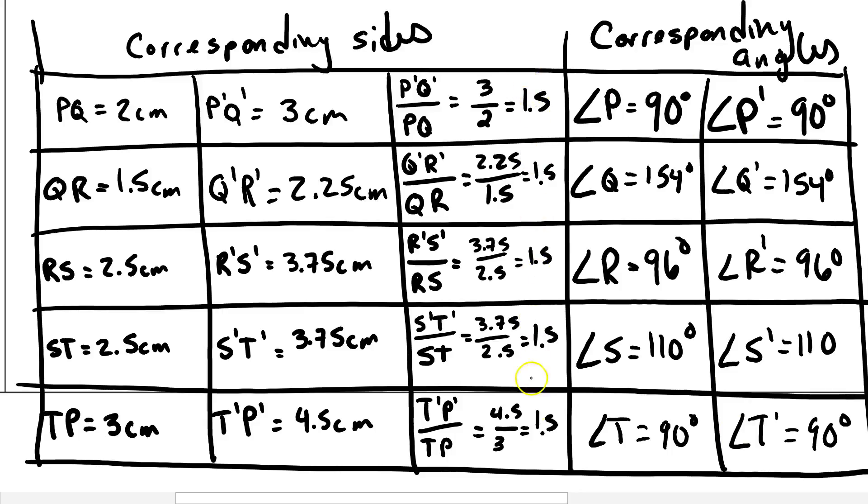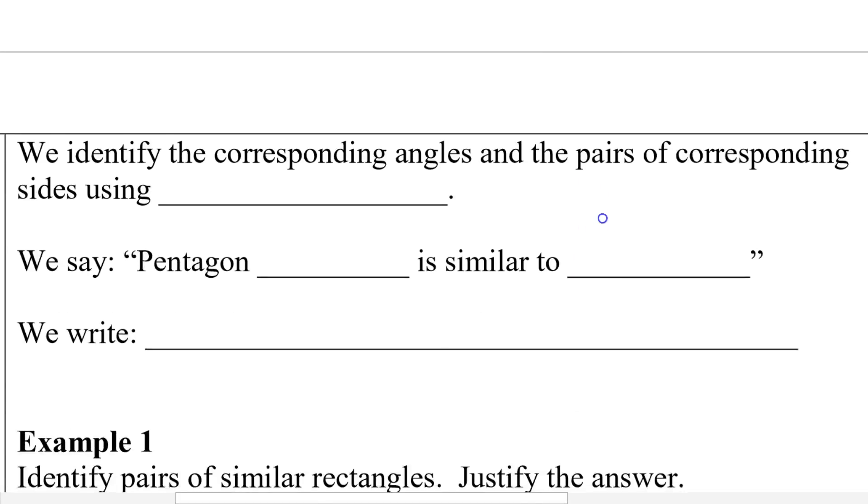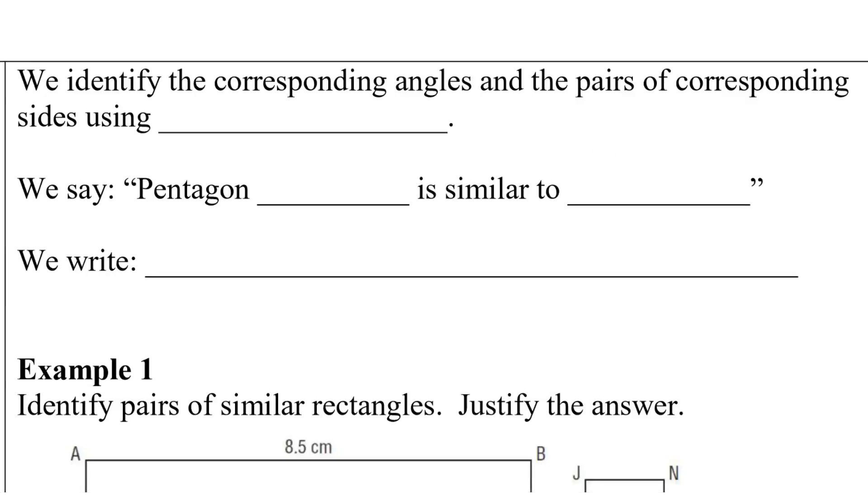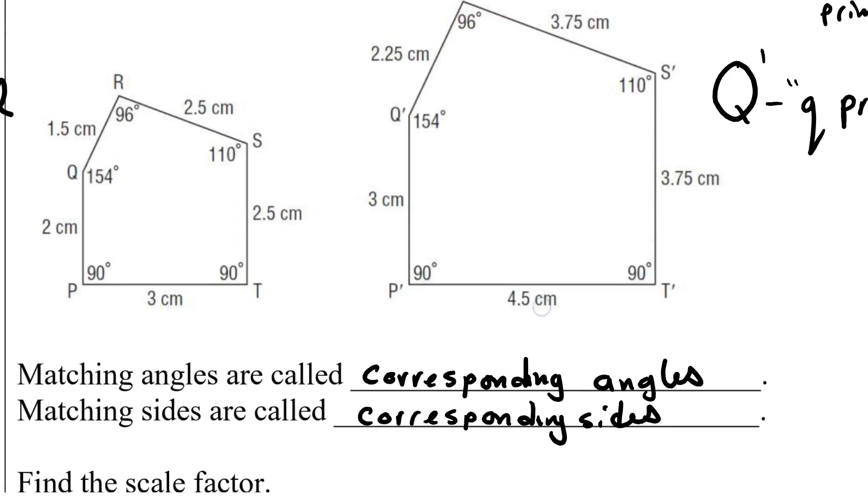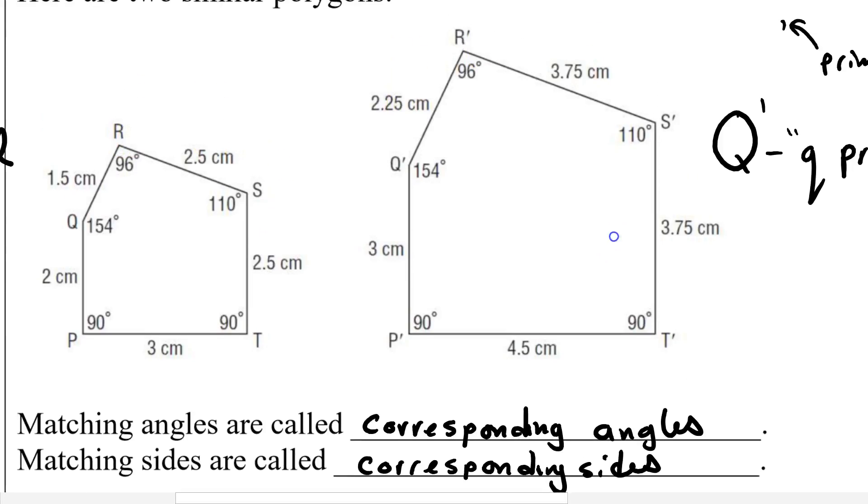And the corresponding angles are the same as well. So since the scale factor is the same for every single side and all the angles are pairs of corresponding angles, we can call this a similar polygon. So we identify corresponding angles and their pair of corresponding sides using ratios. So we can either think of this as a reduction of this shape, or we can consider this as an enlargement of this shape.